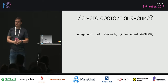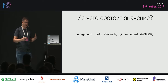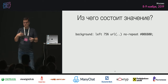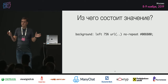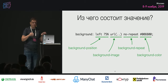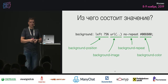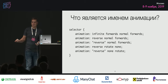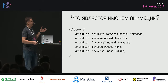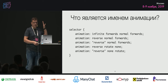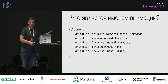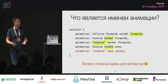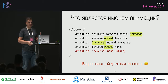Вот ещё один пример — это background. Это shorthand-свойство, там есть множество разных компонент: position, повторение, image, repeat, color. Очень сложный вопрос на самом деле — вот есть значение свойства animation. Оно композитное, и где-то здесь спрятаны имена анимации. Вы их видите? На самом деле это очень сложный и каверзный вопрос. Здесь даже зная спеки, даже будучи экспертом в CSS, очень сложно определить, где же на самом деле спрятано имя анимации.